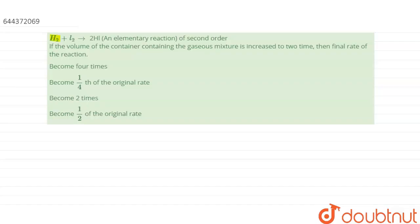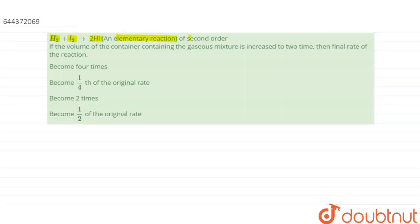Hello everyone. The question is: H2 plus I2 gives 2HI. It is an elementary reaction of second order. If the volume of the container containing gaseous mixture is increased to 2 times, then the final rate of the reaction will become—we have been given 4 options.